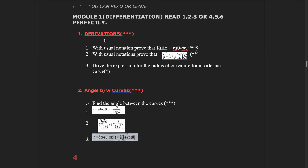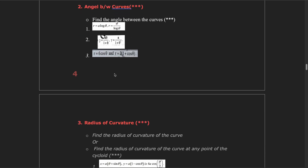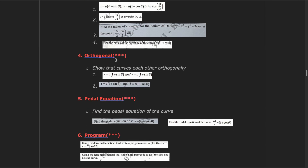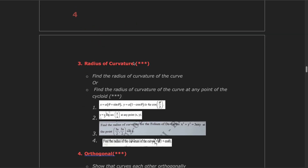Module 1 is always about differentiation. The first question is always about derivation — specifically, tan φ = r·dθ/dr. This is the fixed derivation you must learn. The second derivation is 1/p² = 1/r² + (1/r⁴)·(dr/dθ)². Try to learn both derivations perfectly. The second question is angle between curves, and the third is radius of curvature. In the lower part: orthogonal, pedal equation, and program. Focus on the above three questions.